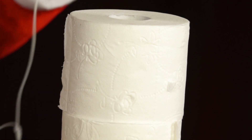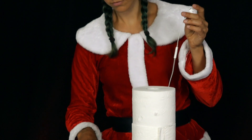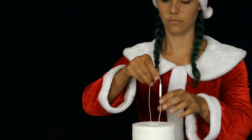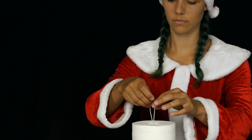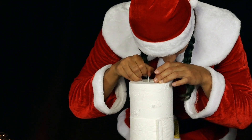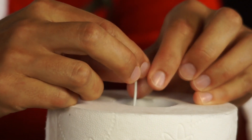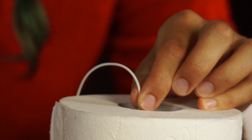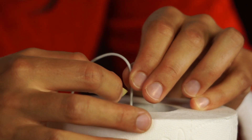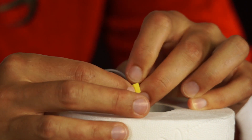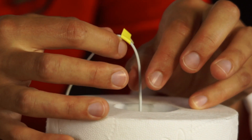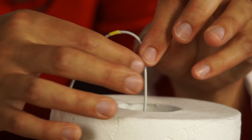Now, she lets the other end of the earphone cable pass down into the tube from the top to the bottom and pulls the second earphone very slowly up the cable and out of the tube. This changes the volume of the sound. As soon as she finds a minimum in the volume, she marks the cable with an adhesive strip and continues until the earphone has reached the top of the cardboard roll.